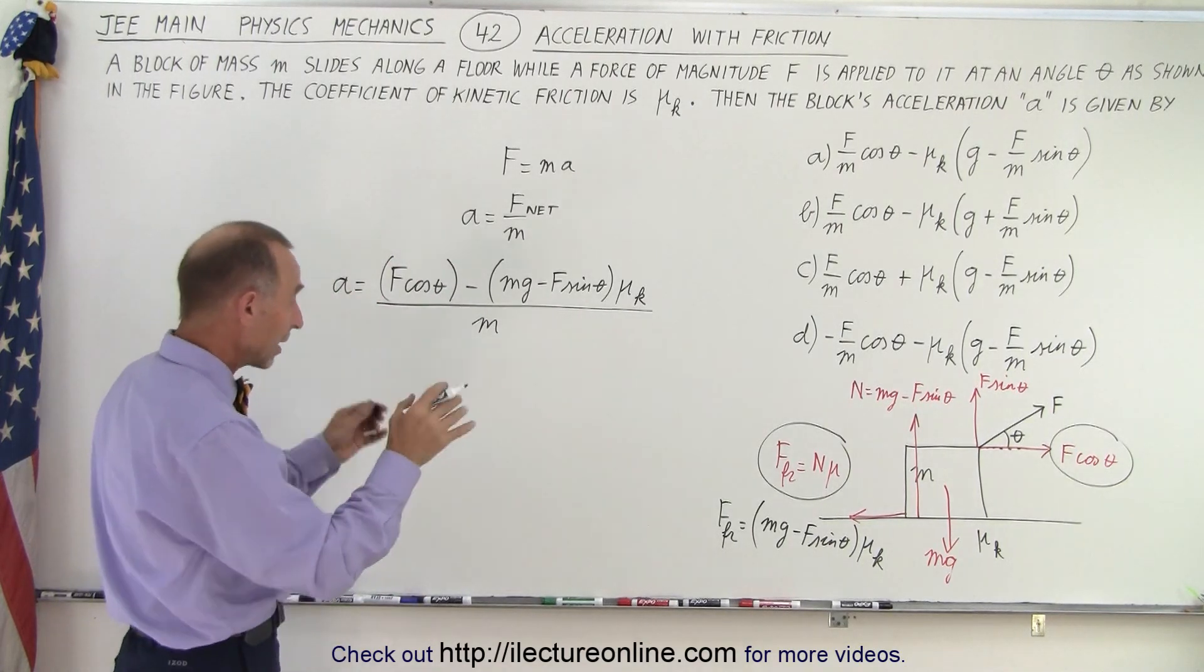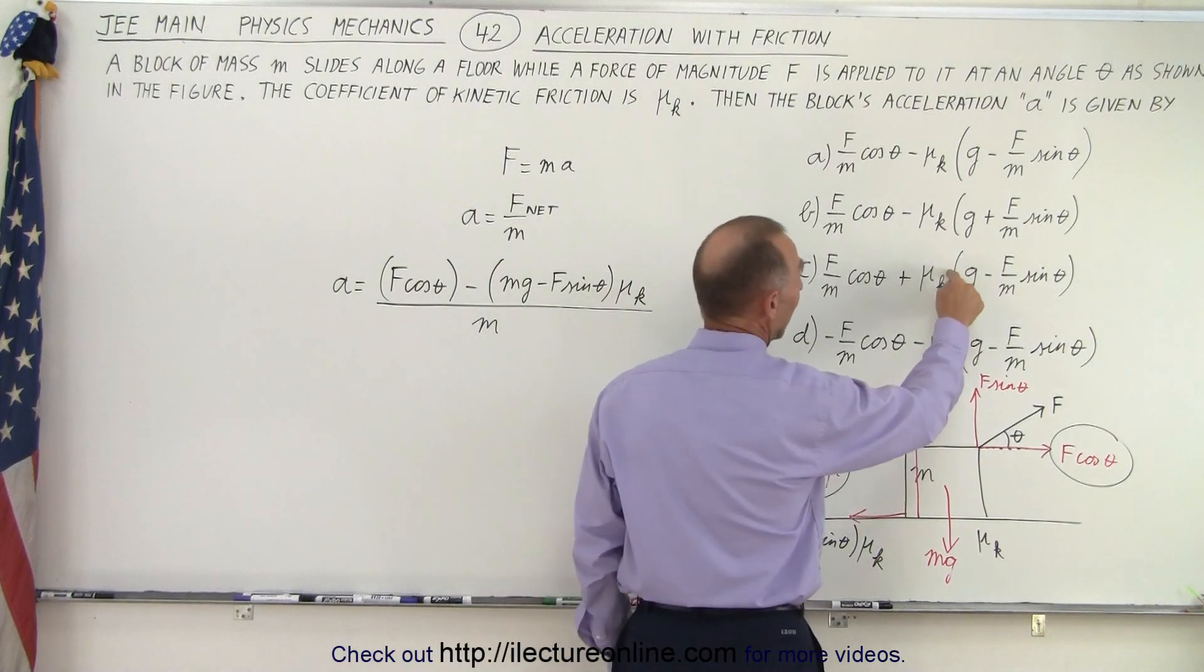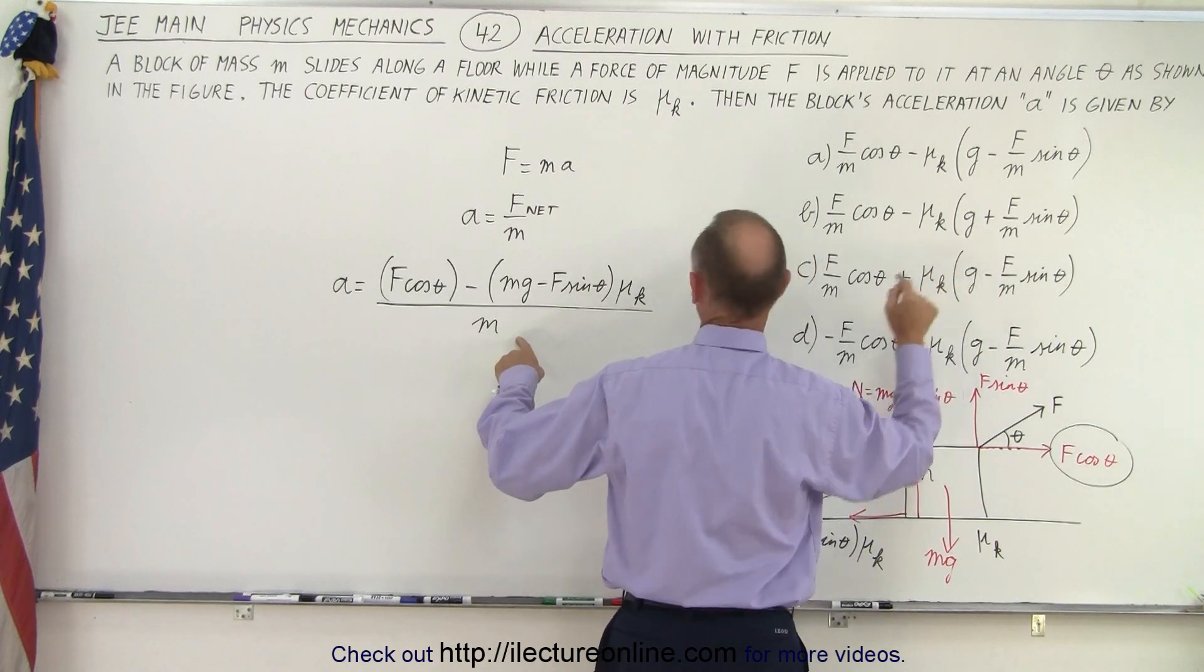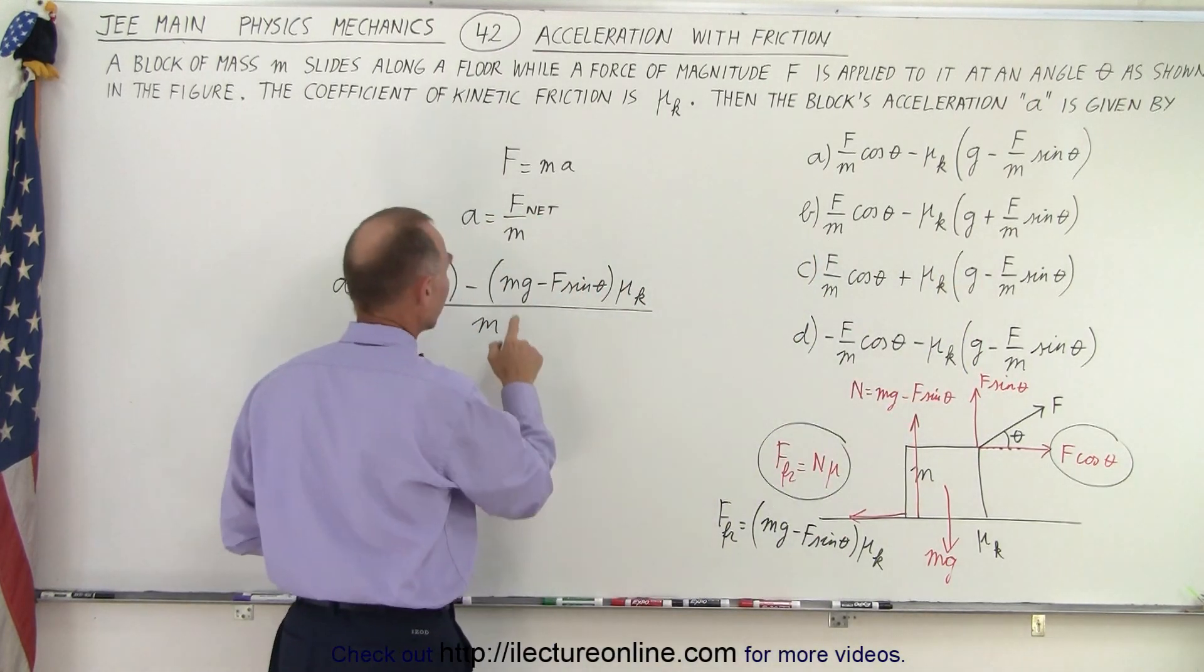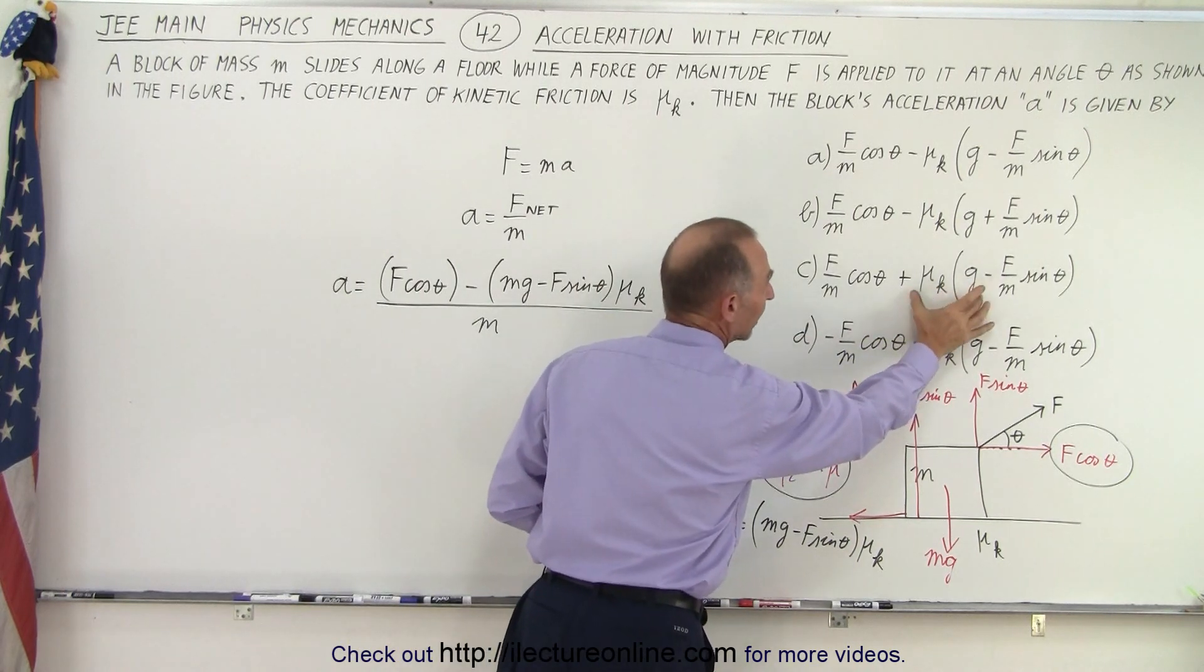Now when I go and take a look at the answers here, notice what we could have done is they could have kept the m in here and divide by m so everything is divided by m. And then we need an m in the numerator which results in this term mg μ_k.